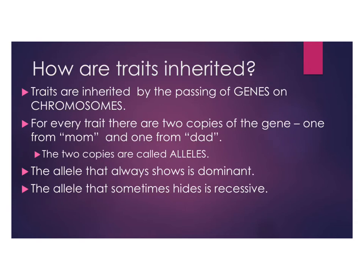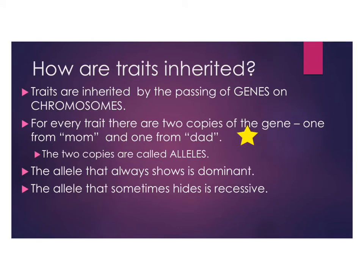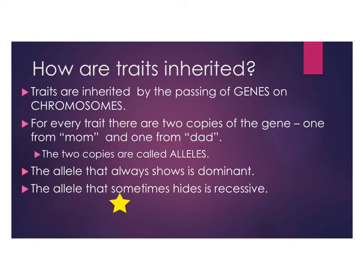Inheritance happens by the passing on of genes, which are on chromosomes — genes are a piece of a chromosome. For every trait there are two copies of the gene: one copy came from the mother and one from the father. These two copies of a gene are called alleles. The allele that always shows is called the dominant allele, and the allele that sometimes hides is called the recessive allele.